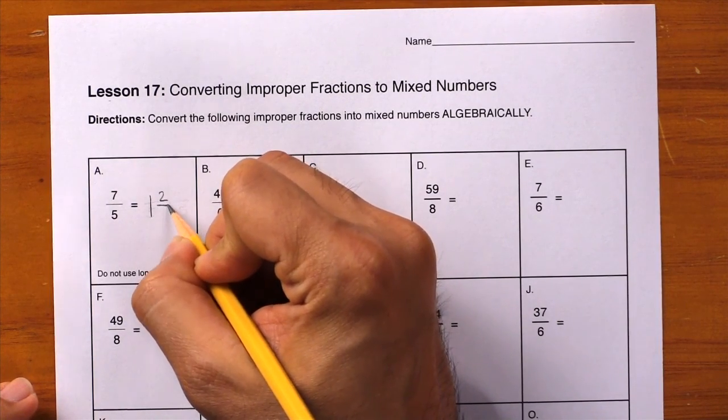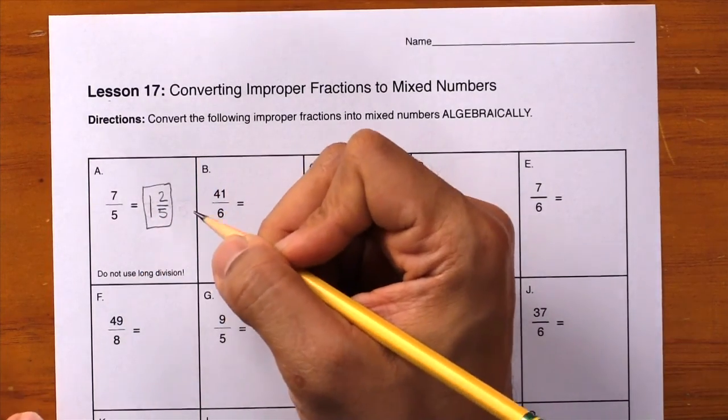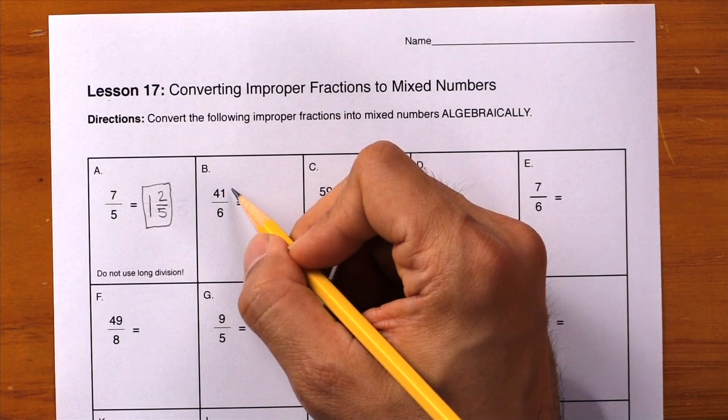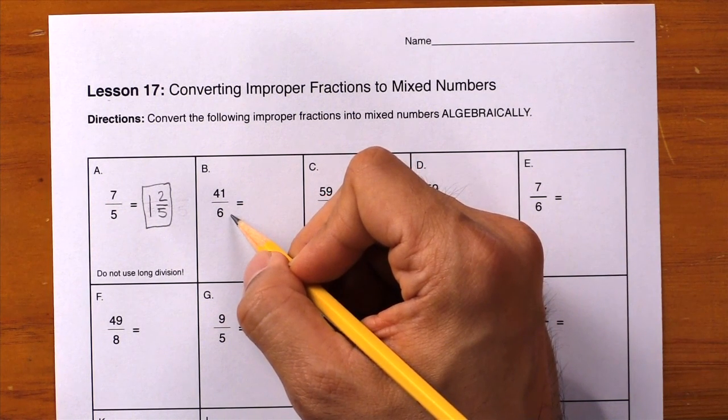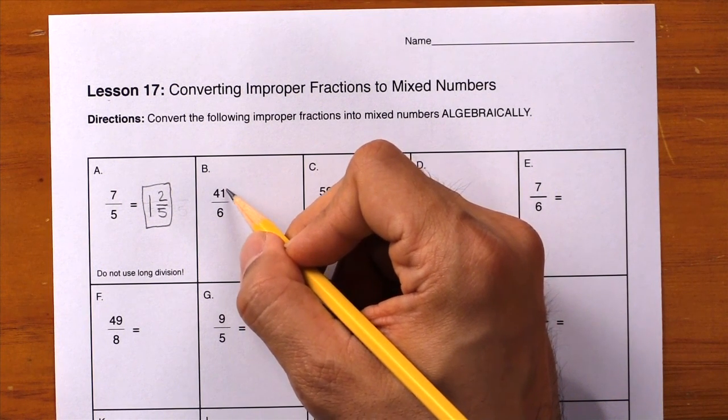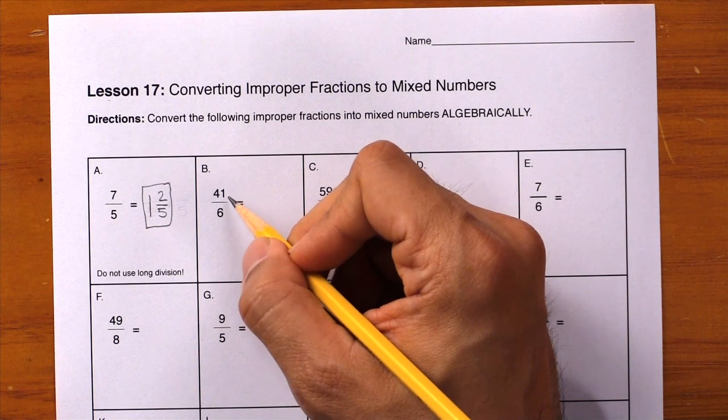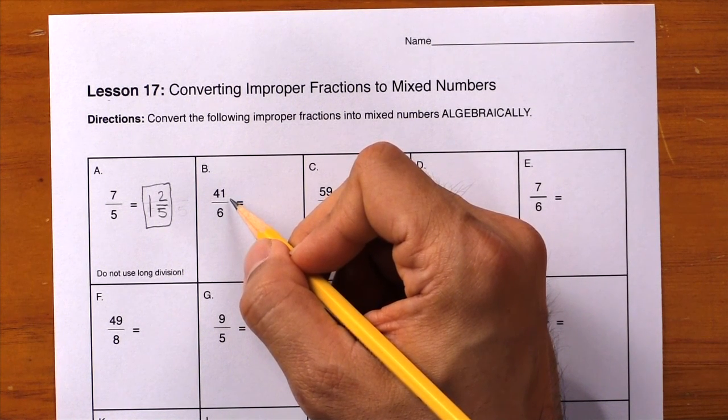Let's go ahead and look at box B. Here we have the fraction 41 sixths and we're going to try to do this in our head now. Can you do 41 divided by 6 evenly? No, so you're going to count backwards. 40 is not going to work, neither will 39, 38, or 37.